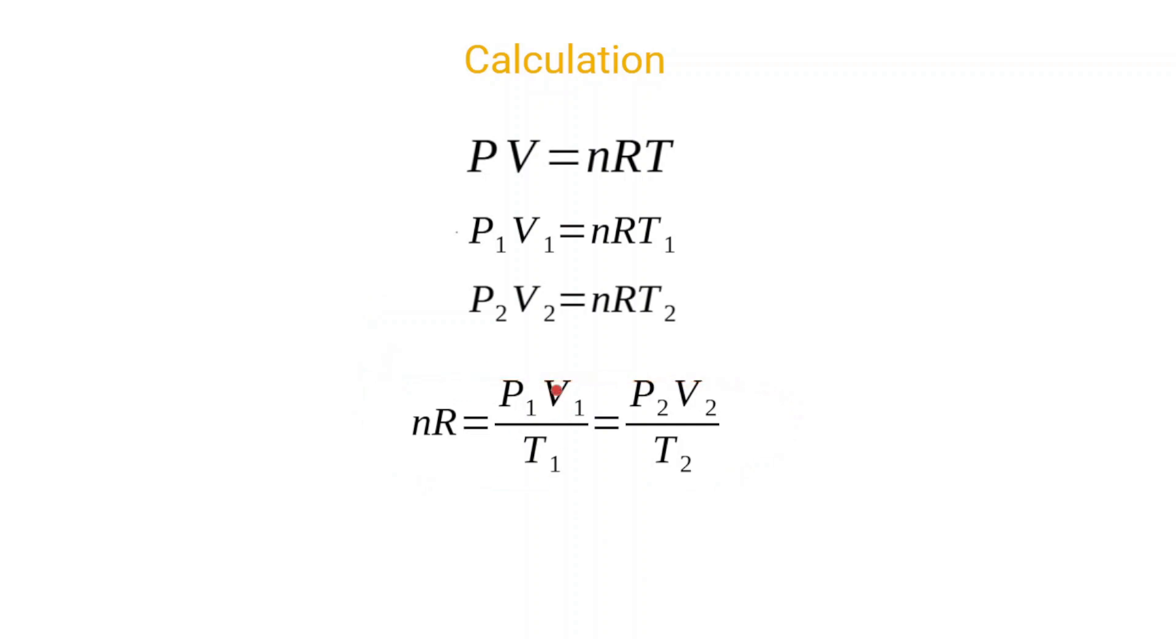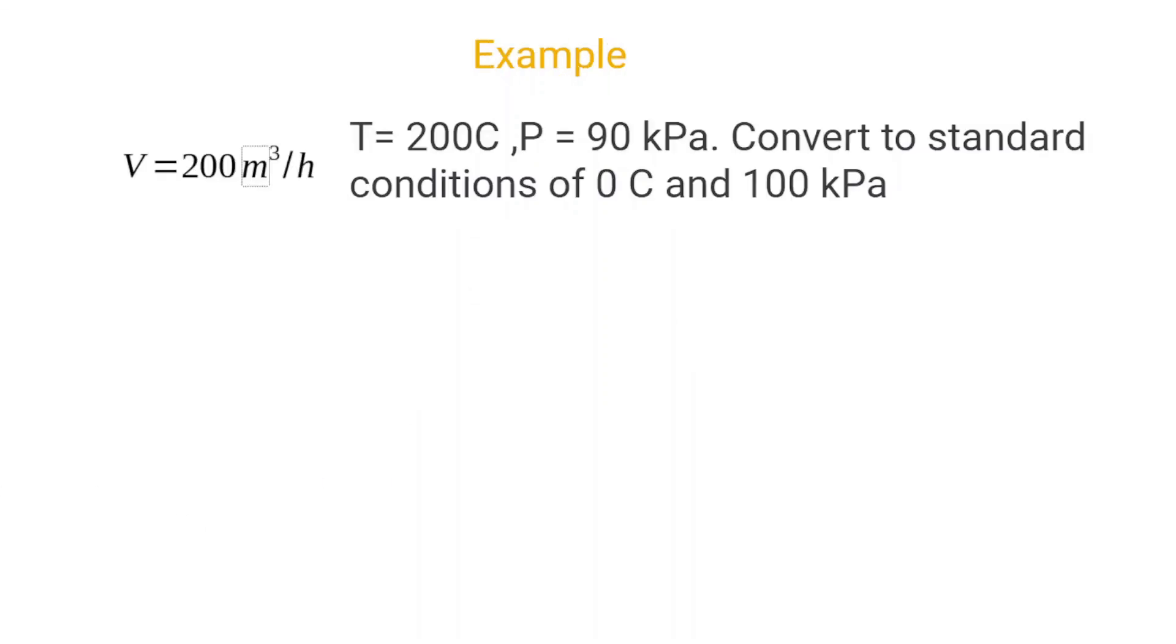From here, if we simplify the equation to get the volumetric flow or volume on one side, we get our relationship over here. And this is what we will be using to convert between normalized flow. Because whether it's a volume or a volumetric flow rate, this equation will hold true.